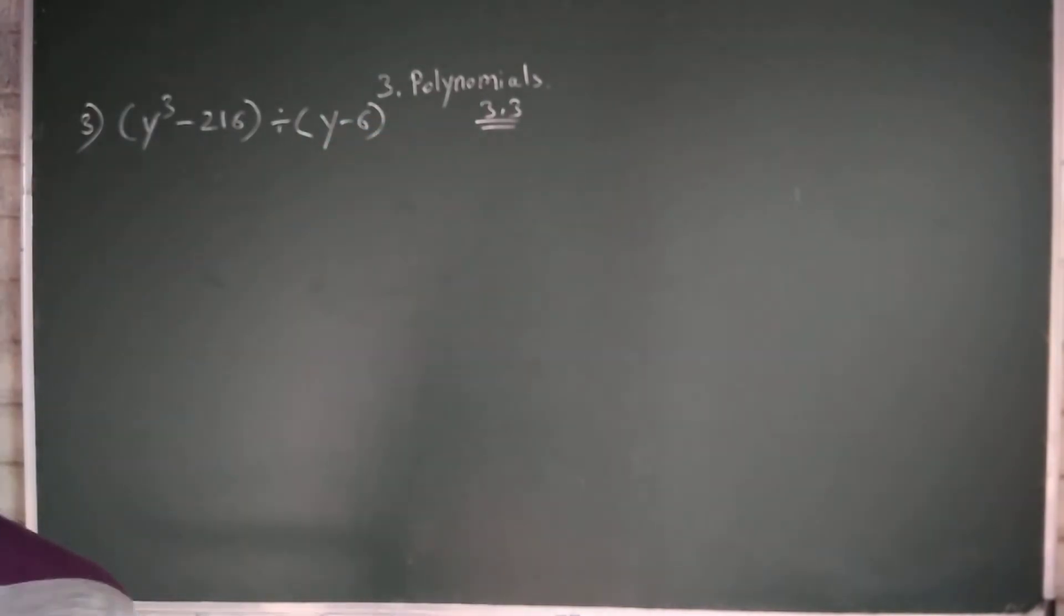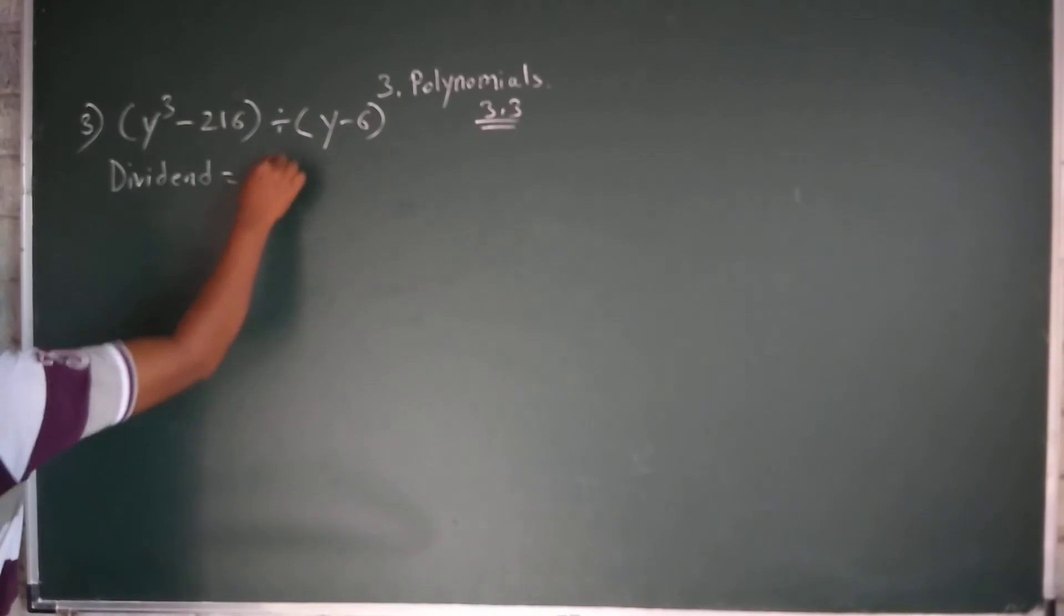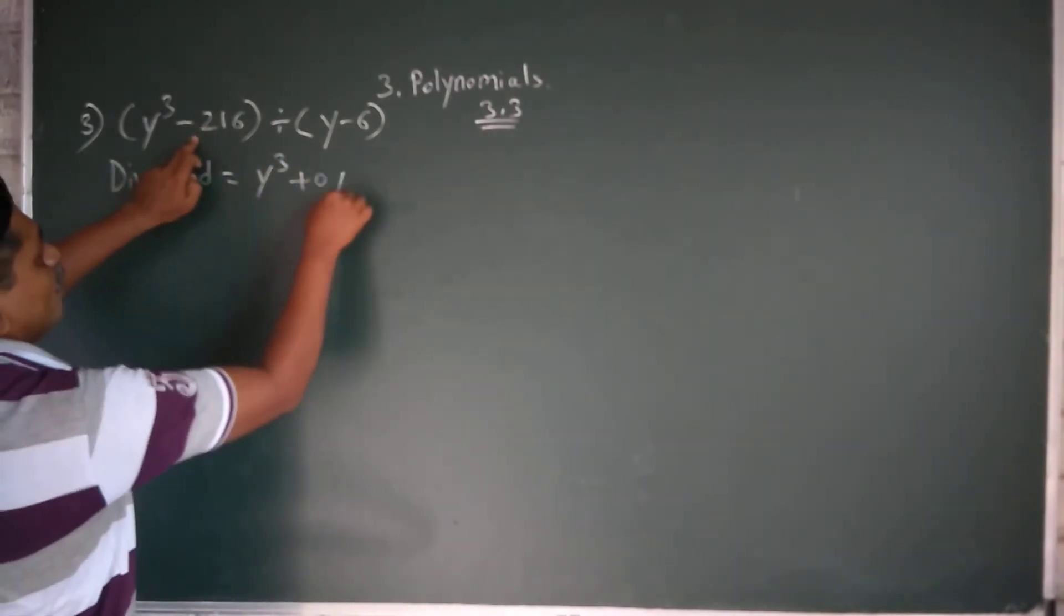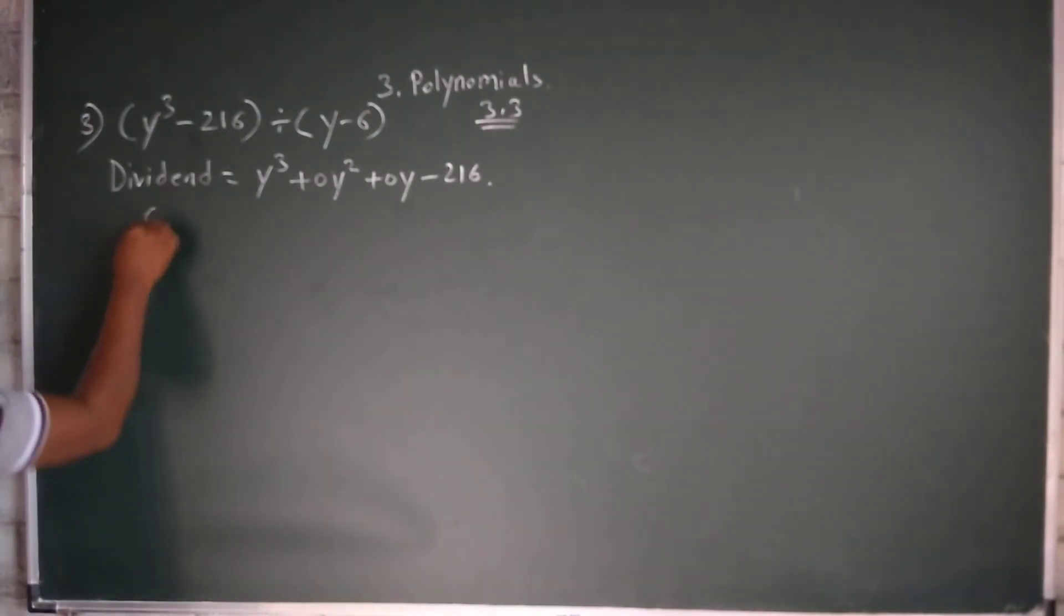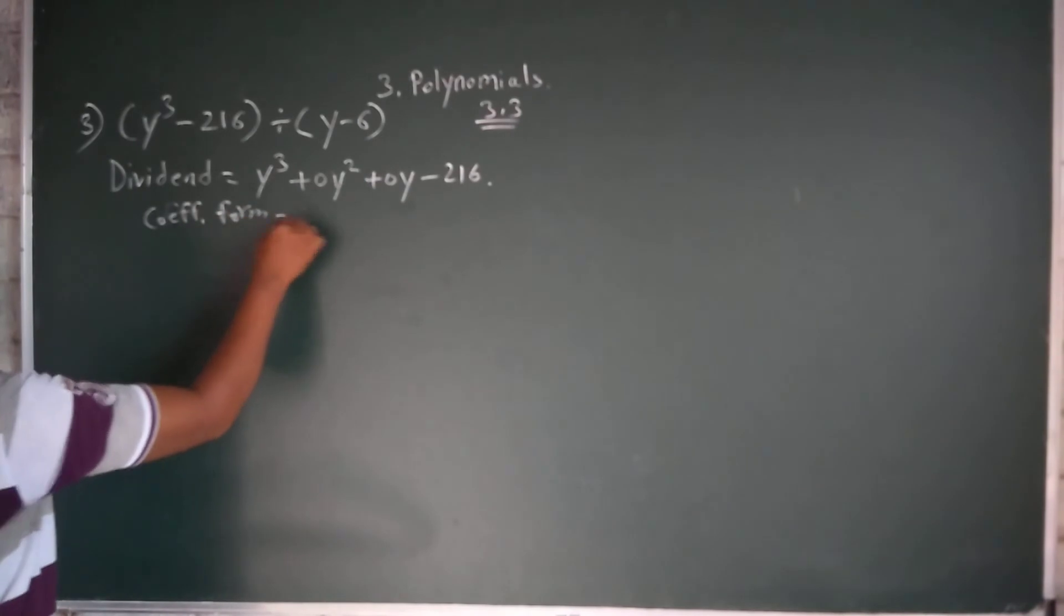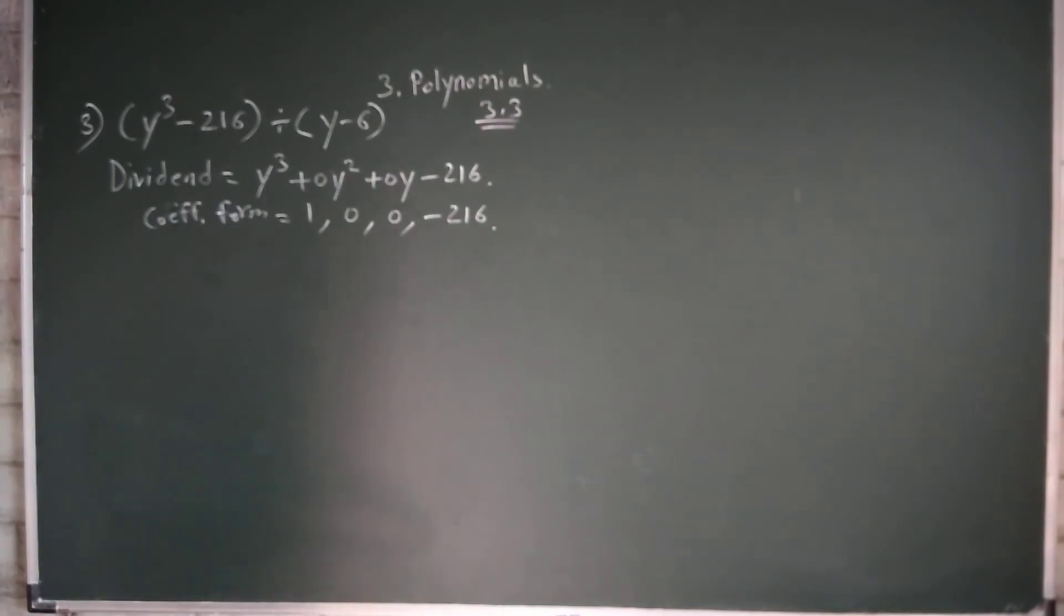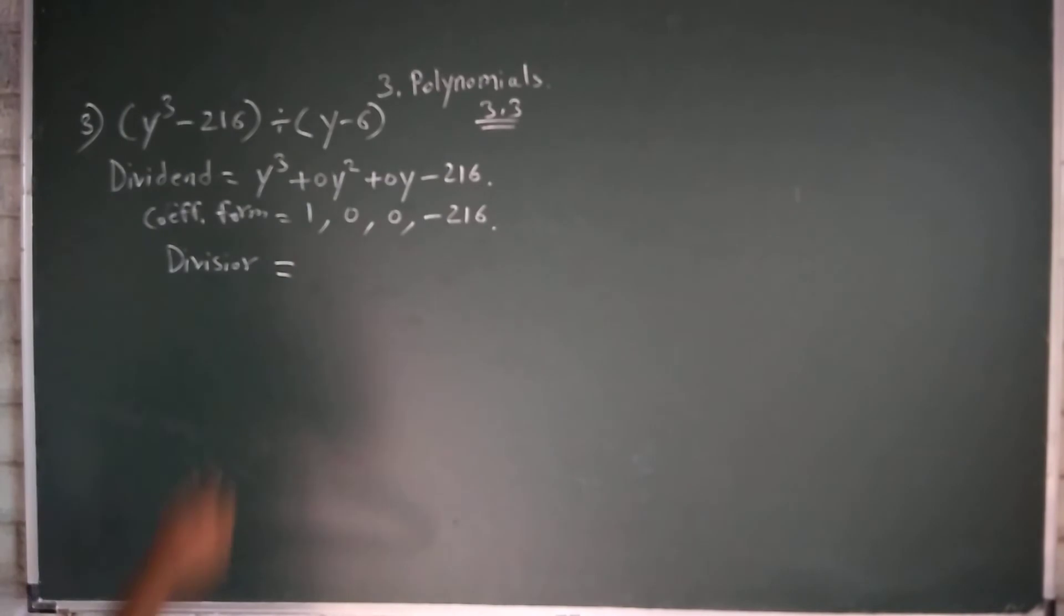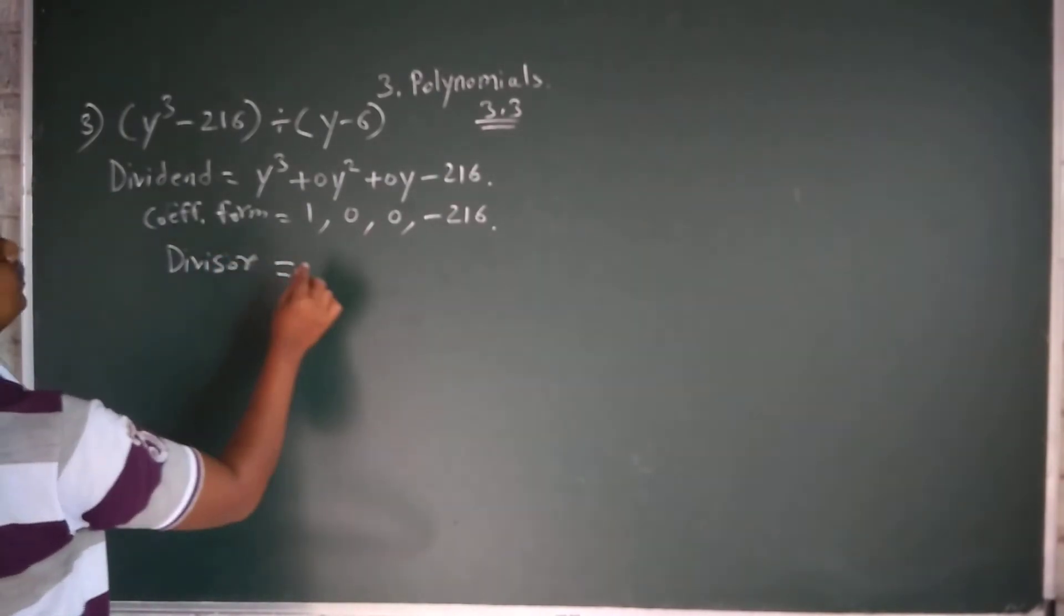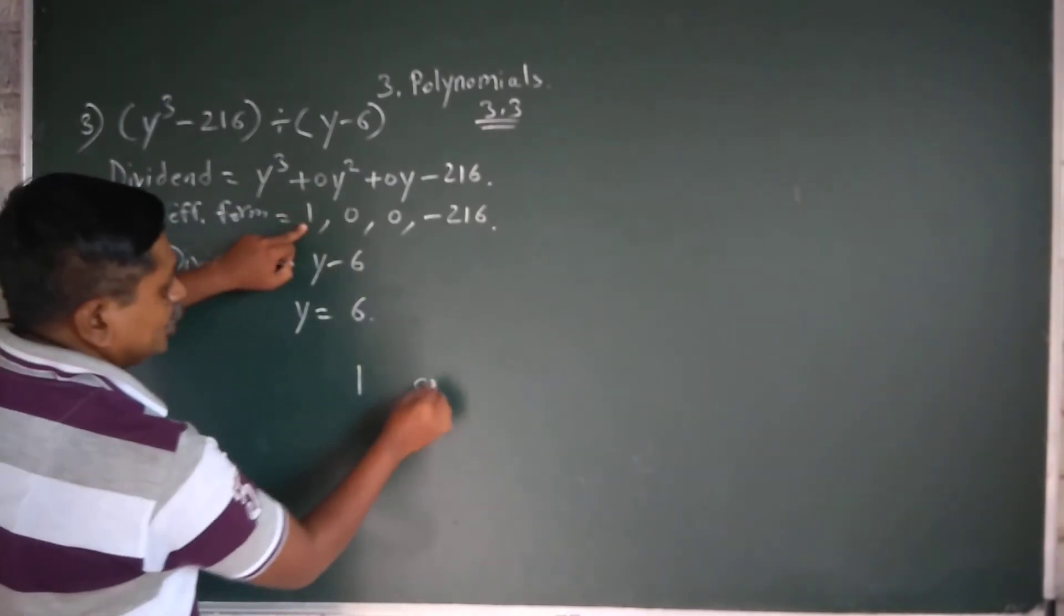Now see, dividend y³, we will take in sequence: y³ + 0y² + 0y - 216. So coefficient form: 1, 0, 0, -216. Then divisor: y - 6. Minus 6, opposite is plus 6. By synthetic division, now we will solve.